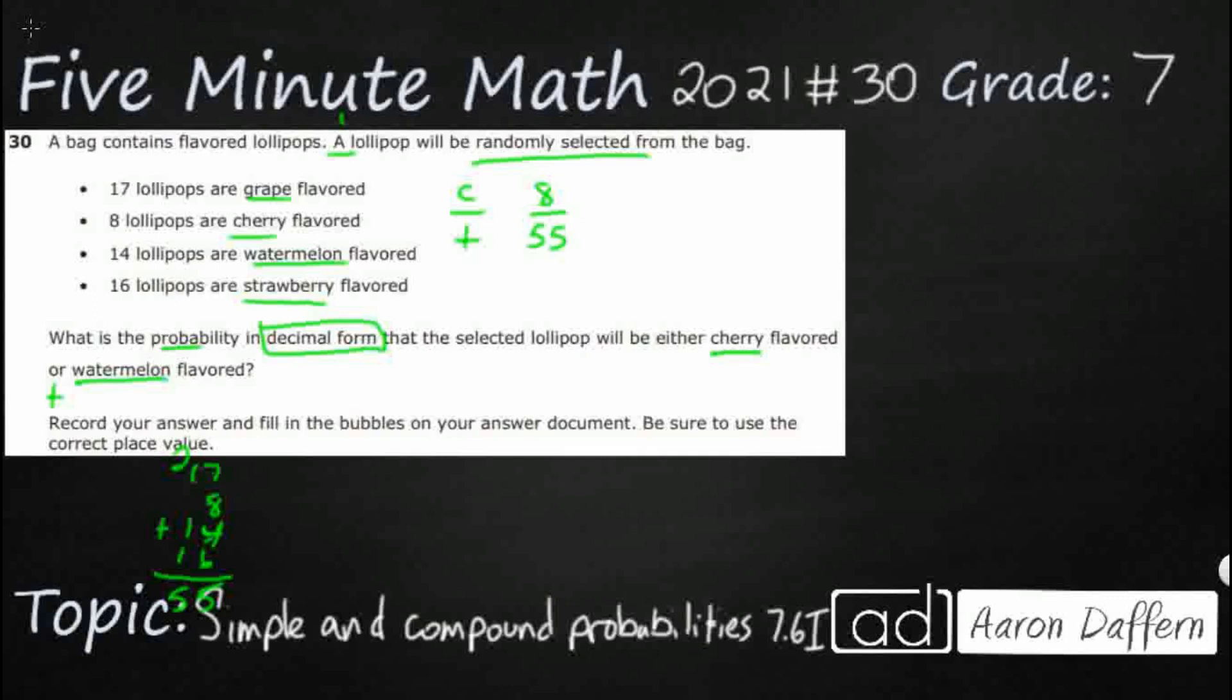Let's see what we have for our watermelon. So we've got our watermelon over our total. Watermelon is 14 out of 55.